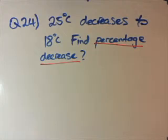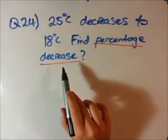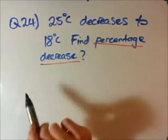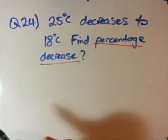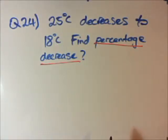Question 24 is again very similar to question 23, but this time we have a percentage decrease, not an increase. We have 25 degrees in the middle of the day and it's decreased to 18 degrees at night. We want to find out the percentage decrease between the day temperature and the night temperature.